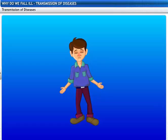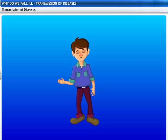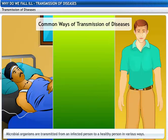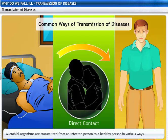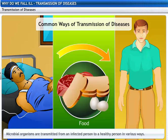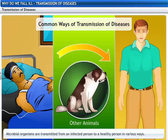How exactly do infectious diseases spread? Diseases spread through microbial organisms. Microbial organisms are transmitted from an infected person to a healthy person through direct contact, air, water, food, mosquitoes, and other animals.